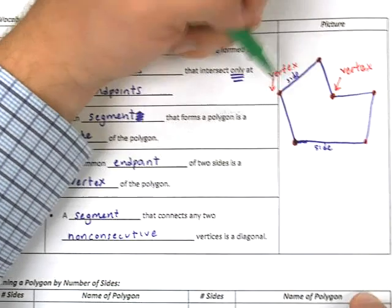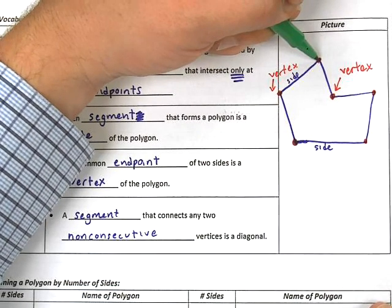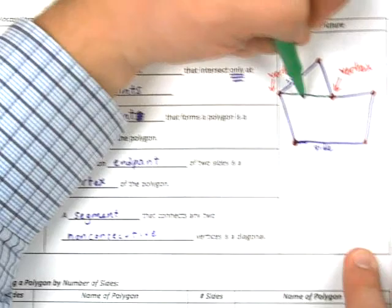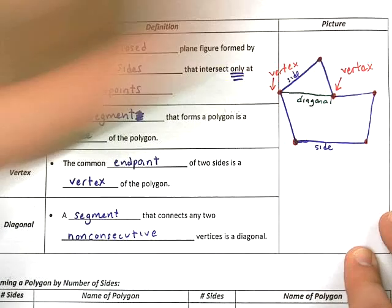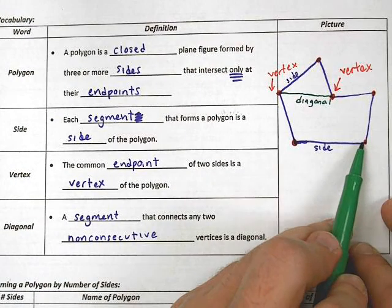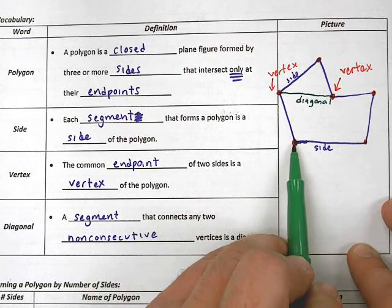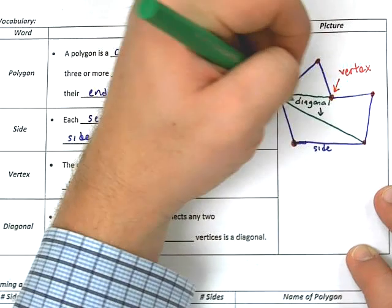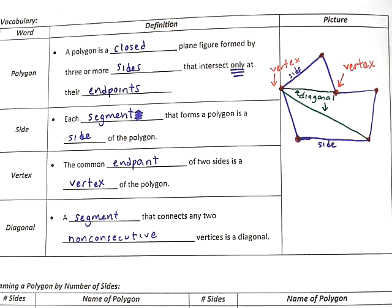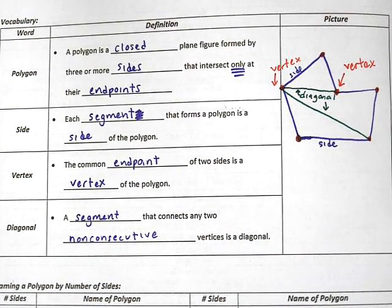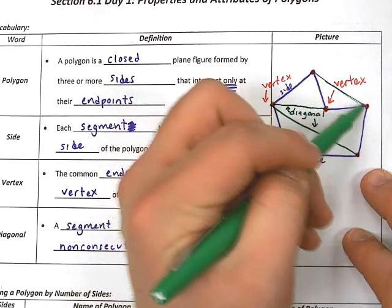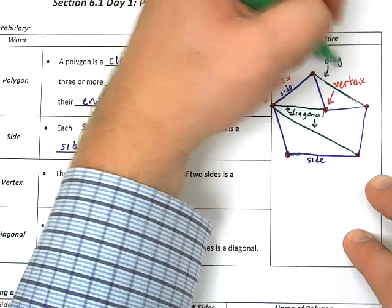What I'm looking for is non-consecutive. So let me start at this vertex, skip this one, and then go to this one. If I draw in this segment, this is a diagonal. If I start at this vertex and come over here, that is also a diagonal. Diagonals are formed by connecting two non-consecutive vertices. Something like this is also a diagonal — even though it's not within the shape, it's still a diagonal.